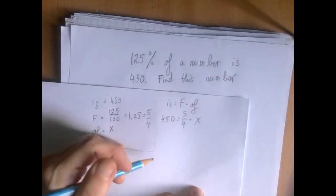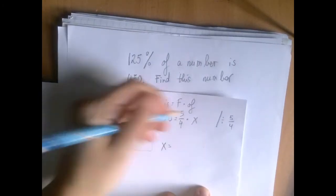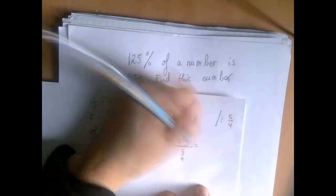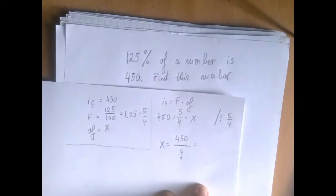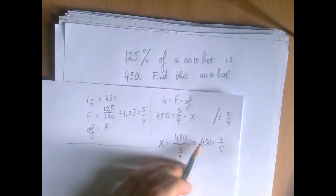So then to solve for x, we're going to divide both sides by whatever is multiplying x, in this case 5 over 4. And so x is 450 divided by 5 over 4. To divide is to multiply by the reciprocal. So we're talking about 450 times 4 over 5.